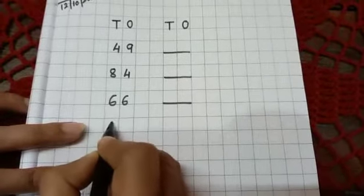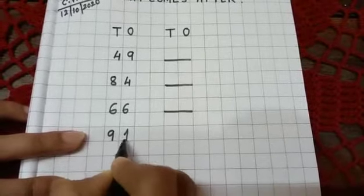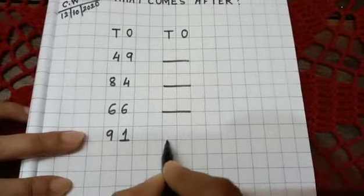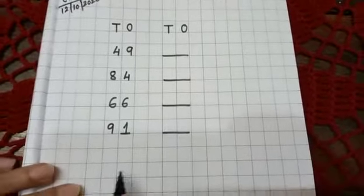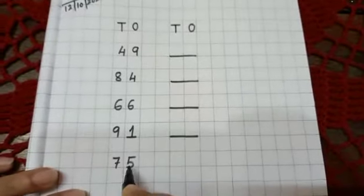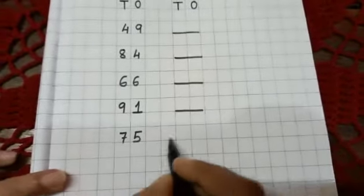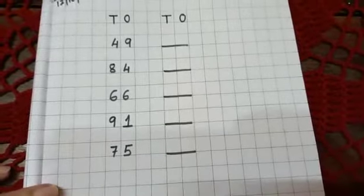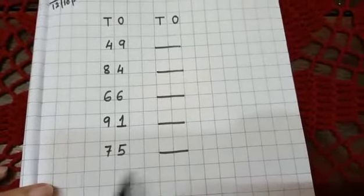Now nine, one, ninety-one, dash. Then seven, five, seventy-five, dash, seventy-five. Next number.